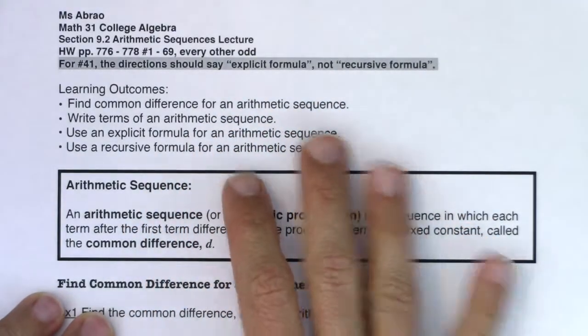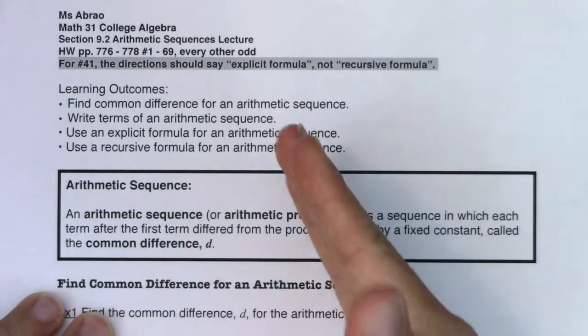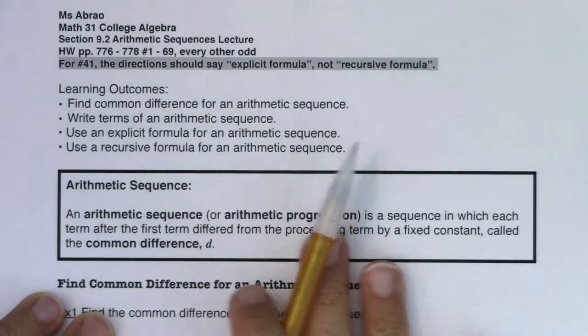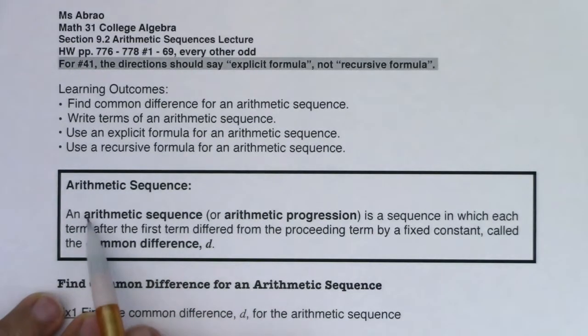When I say sequence, we're just going to list the numbers. When we get to series, we are going to add the terms of the sequence. Let's learn about arithmetic sequences. An arithmetic sequence, or sometimes called an arithmetic progression, is a sequence in which each term after the first term differed from the preceding term by a fixed constant called the common difference d.